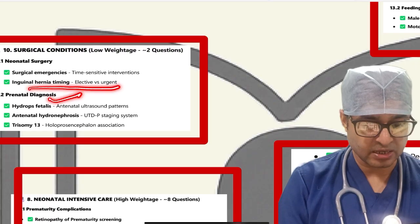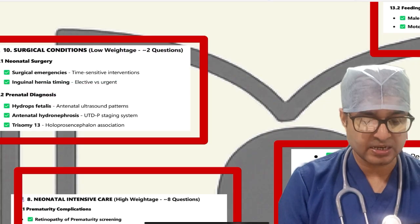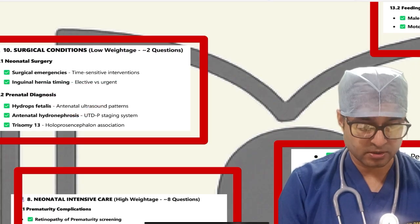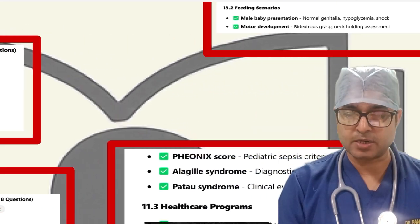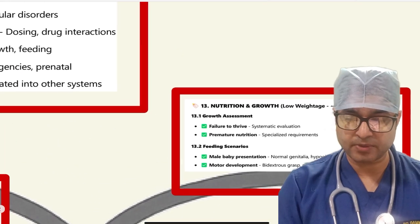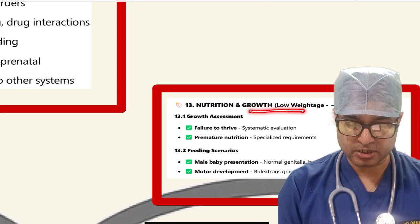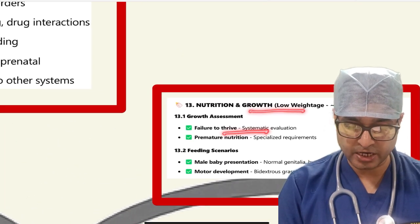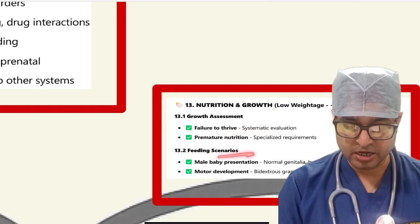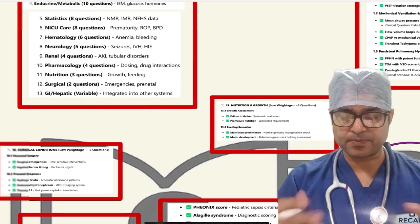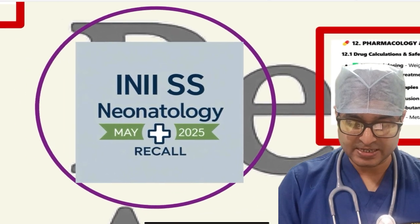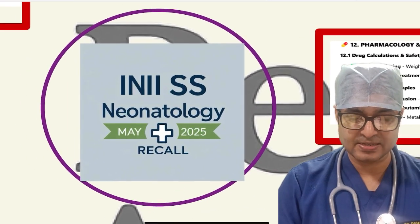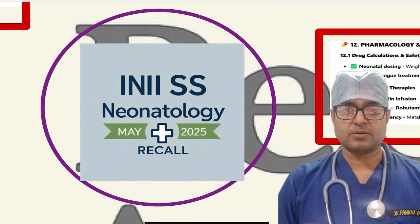Surgical questions covered surgical emergencies, inguinal hernia timing, hydrops fetalis, antenatal hydronephrosis with UTD patterns, trisomy 13. Nutrition topics included growth failure to thrive, premature nutrition, feeding scenarios, and various male baby presentations. This represents the overall pattern-based recall.